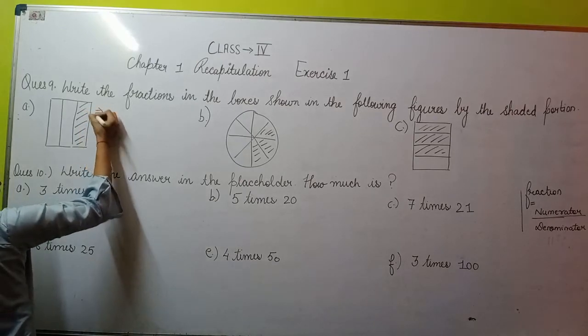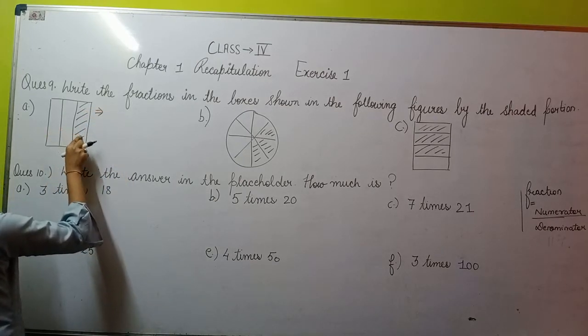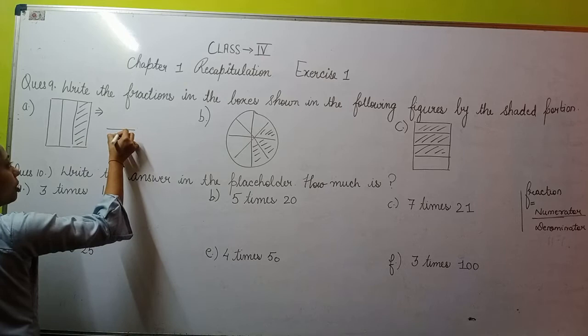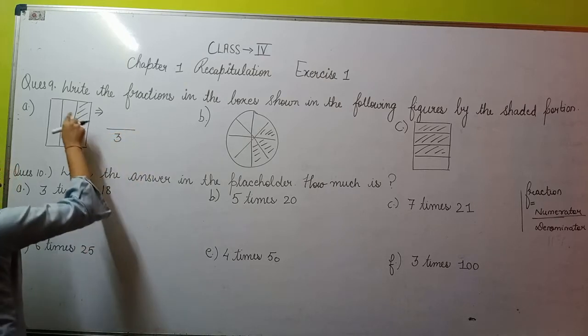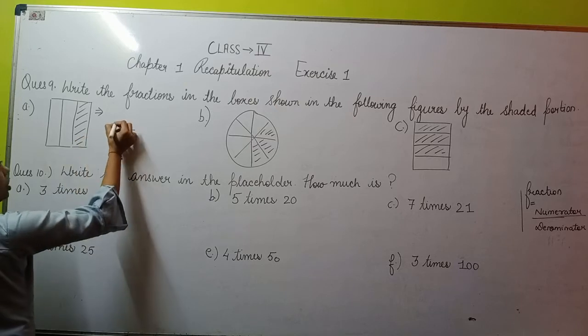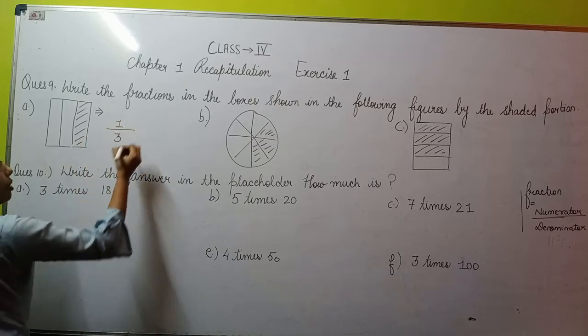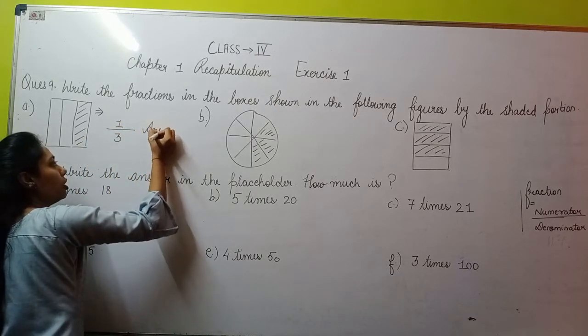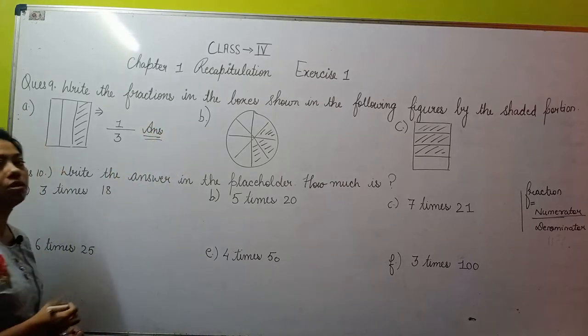Here in the first figure, you'll see total one, two, and three parts. So total parts you'll write below. Now out of these three parts, how many are shaded? You'll see that one part is shaded, so one you'll write on top. So 1/3 will be your answer for the first part.